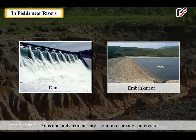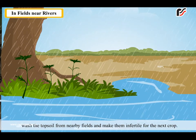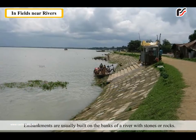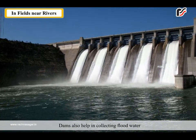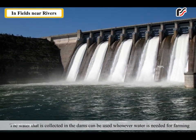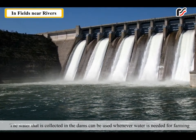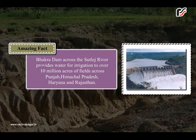In fields near rivers — dams and embankments are useful in checking soil erosion. During heavy rains and floods, the rivers overflow and wash the topsoil from nearby fields and make them infertile for the next crop. Embankments are usually built on the banks of a river with stones or rocks. Dams also help in collecting flood water instead of letting it enter the fields and cause soil erosion. The water collected in dams can be used for farming and to generate electricity. Amazing fact: Bhakra Dam across the Sutlej River provides water for irrigation to over 10 million acres of fields across Punjab, Himachal Pradesh, Haryana and Rajasthan.